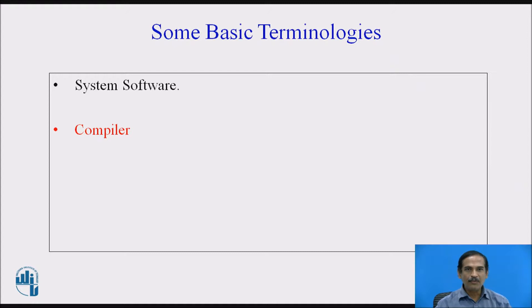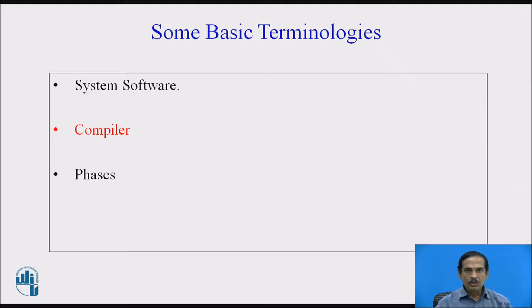A compiler converts this source program to a machine code which can be further converted to a language understood by the machine. The third term we have to consider is the phases. There are a number of complicated tasks to be performed to convert the source code to the machine code. Therefore we divide the task into simpler steps that are manageable and have a defined input and output. These steps are termed as phases.